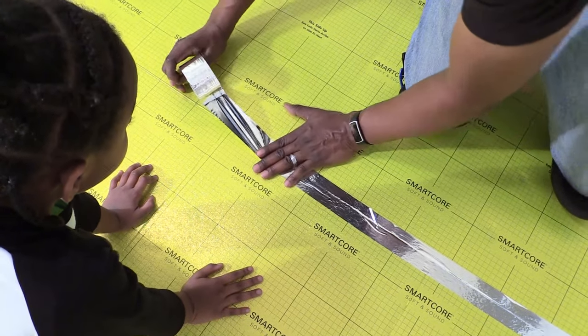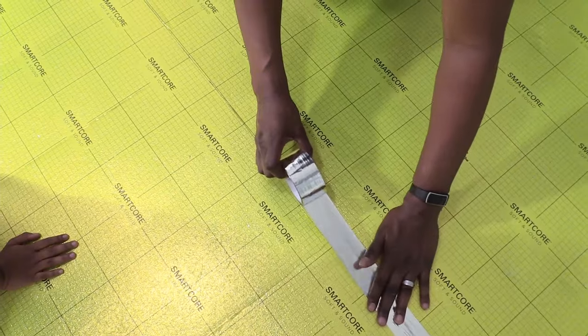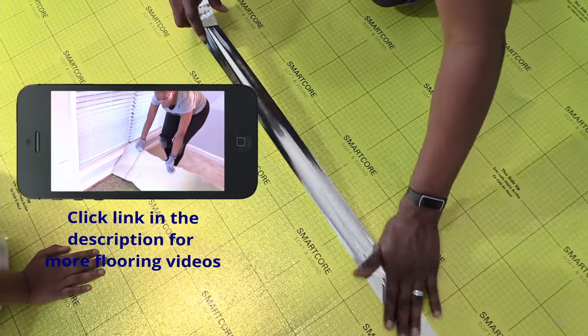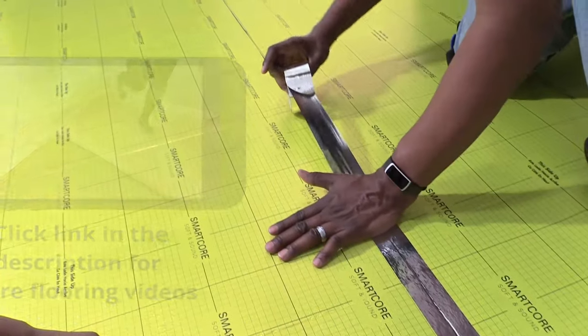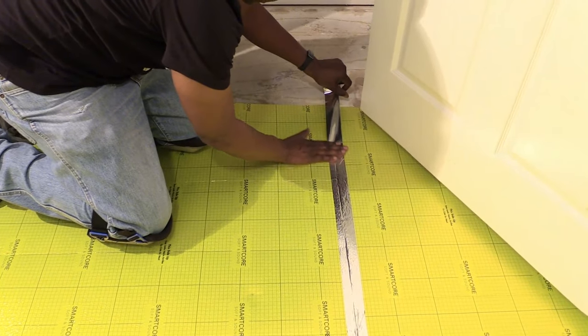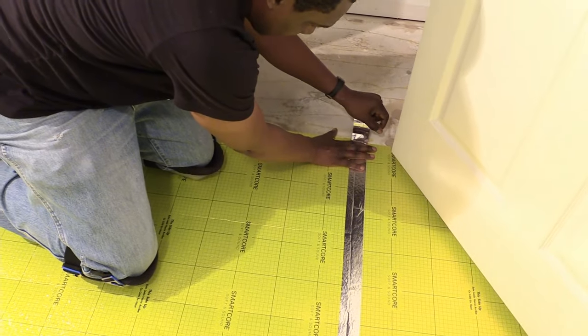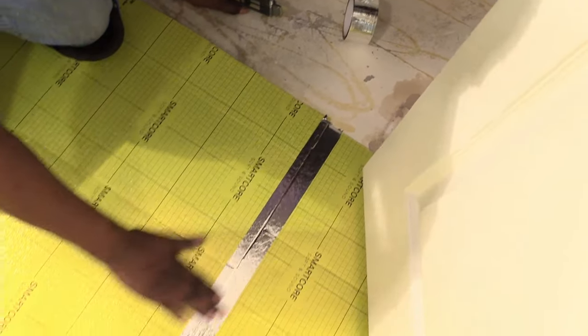It's easy to go from one end of the room to the other. Are you ready to install vinyl planks? Click the link in the description to see more beginner-friendly flooring videos. We could tell that one roll of tape was more than enough for this size room.